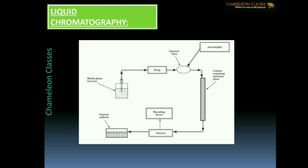The sample is mixed with the mobile phase and then passed through the column that has the stationary phase. The volume and shape of the column depends on the amount of sample and the mode of chromatography being used — for example, a silica plate for thin layer chromatography or a column for column chromatography. The chromatography is then detected by a detector, as various compounds elute from the column at different rates, and a fractional collector automatically stores the sample.